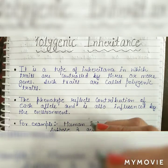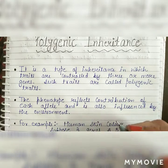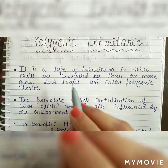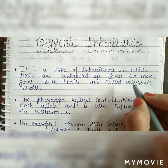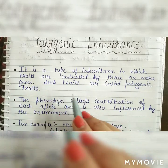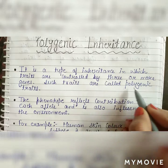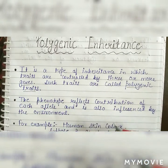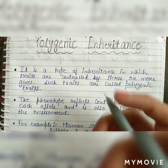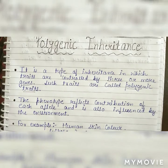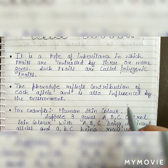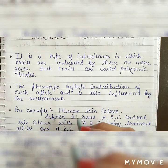Polygenic inheritance वो inheritance है जिसमें एक trait या character three या three से जादा genes से control होता है। उस trait को हम polygenic traits बोलते हैं — polygenic traits वो traits होती हैं जो दो या दो से जादा genes से control होती हैं। The phenotype reflects the contribution of each allele and is also influenced by the environment.